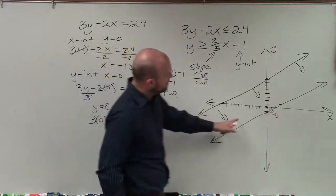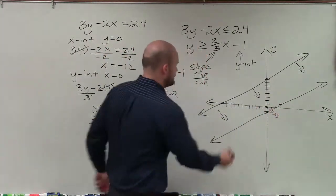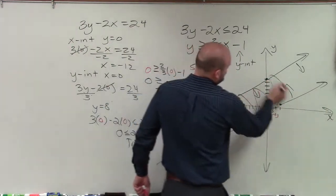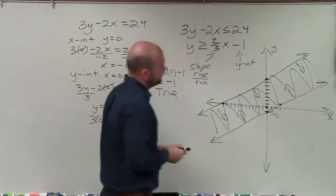So since it's true, now above my line, that means for this one, it's going to be true above. So therefore, my feasible region here that I have is going to look like that.